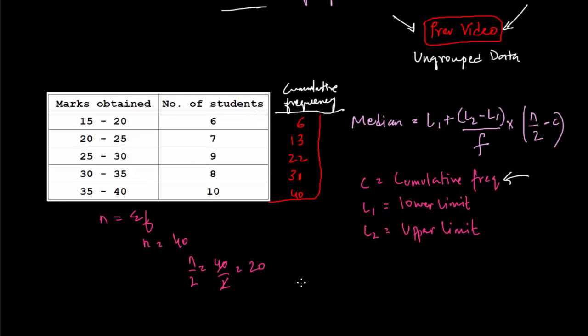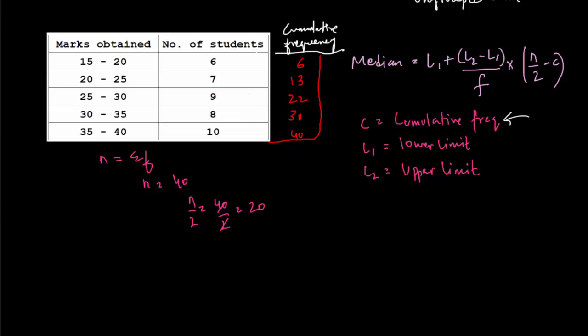The value of N, which is 20, lies in between 13 and 22 in the cumulative frequency column. Let me just underline the area so that you can see where 20 lies. And 20 is much closer to 22. Therefore, the median class for this frequency distribution is 25 to 30. We have the value of L1, which is the lower limit, that is 25. And the upper limit, L2, is 30. The cumulative frequency is 22. And the value of frequency, that is F, is equal to 9. Because we are taking the entire row, all the values are going to replace all these alphabets in this formula.